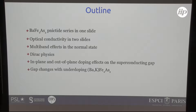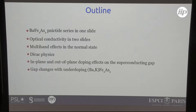I'd like to make a small introduction about the barium arsenide nicktide series, because you haven't seen it too much. I'll cover the optical conductivity briefly, show what the multiband effects have on our measurements, and discuss Dirac physics in the system. I'll also discuss in-plane and out-of-plane doping and what happens with the superconducting gap.